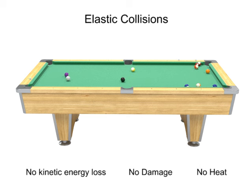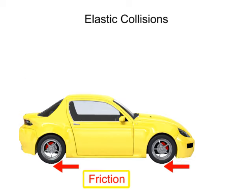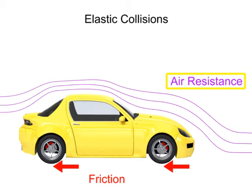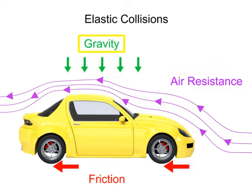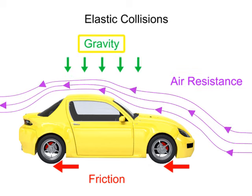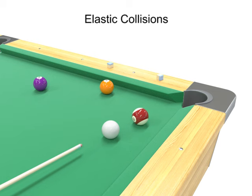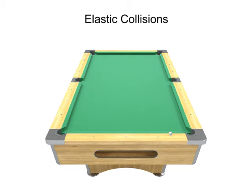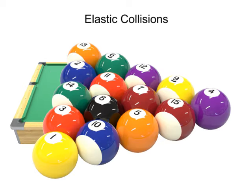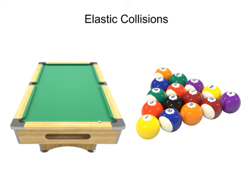In the real world, no collision is perfectly elastic because so many other forces come into play, like friction, air resistance, and gravity. However, the game of pool offers a fairly good elastic representation. Pool tables and billiard balls are designed to reduce the effects of friction, resulting in close to ideal elastic collisions.